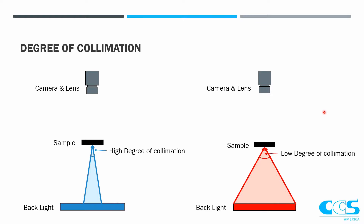When we define the degree of collimation, we essentially are saying from a sample point of view, it's the angle where the light is coming from. So this low degree of collimation — if I pick this point on my sample and I look at all of the angles that the light can come from, this is a very wide angle, so I have a very low degree of collimation.